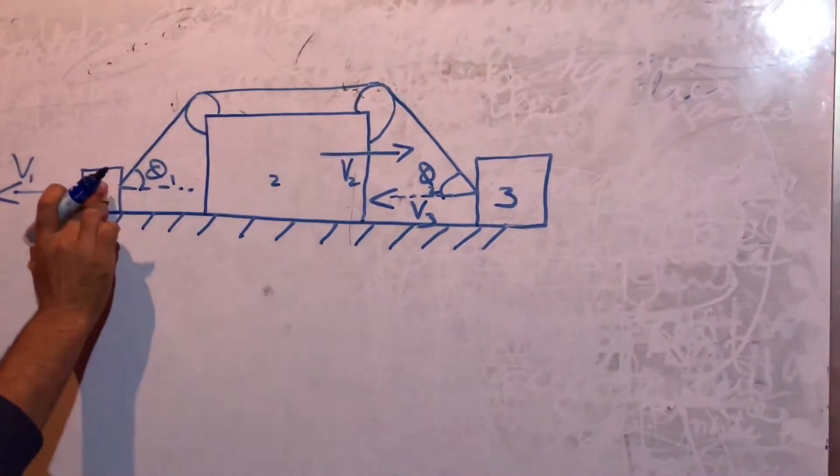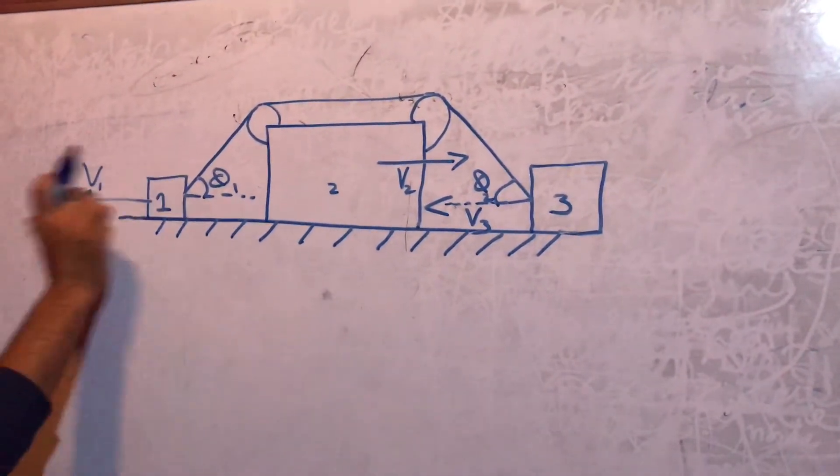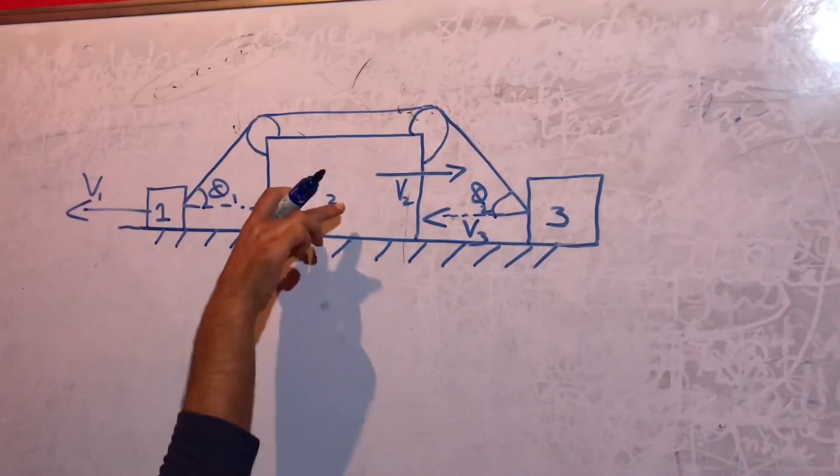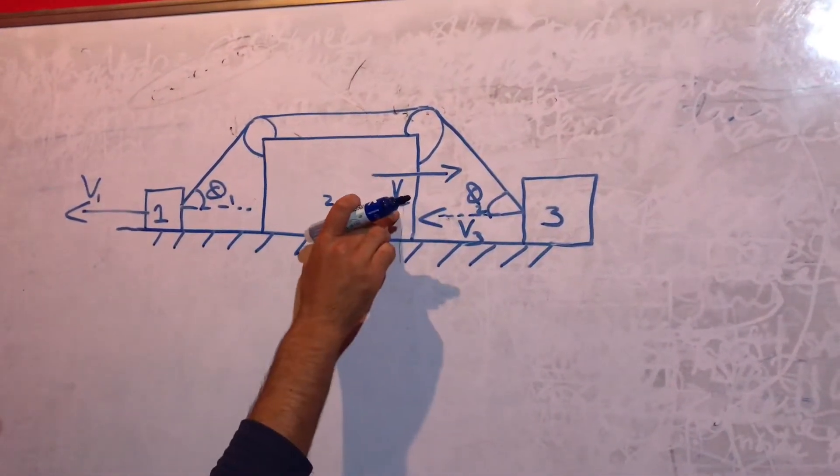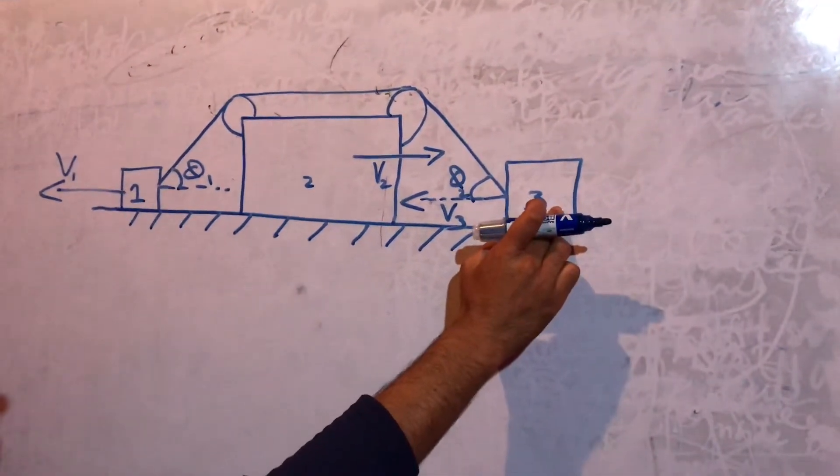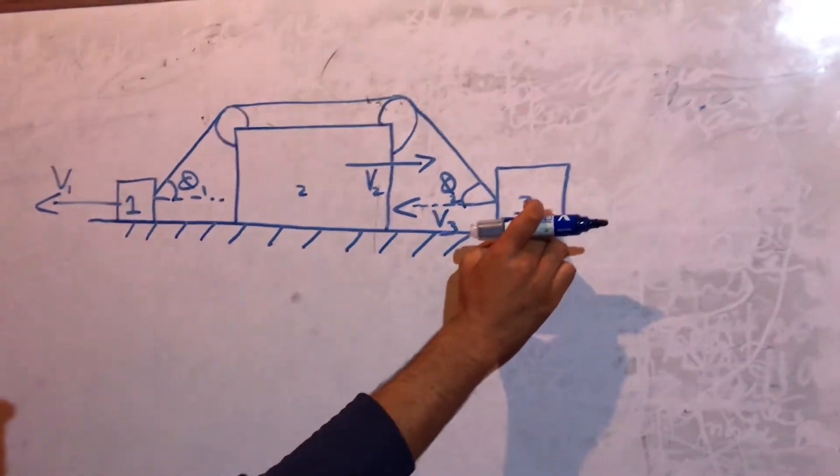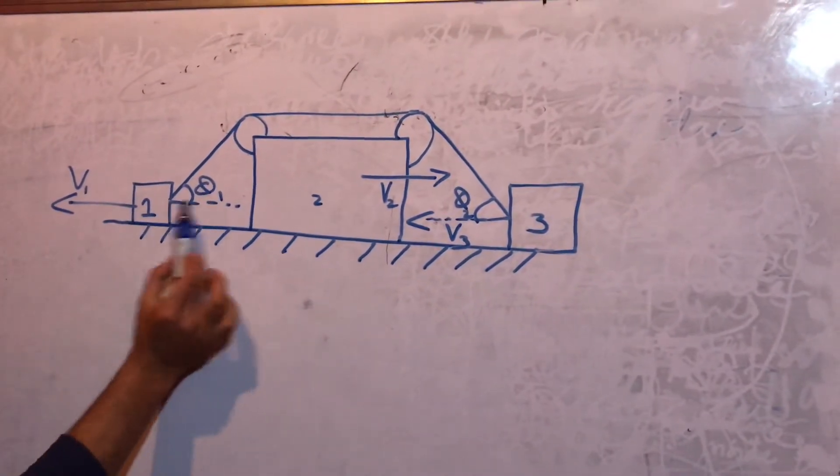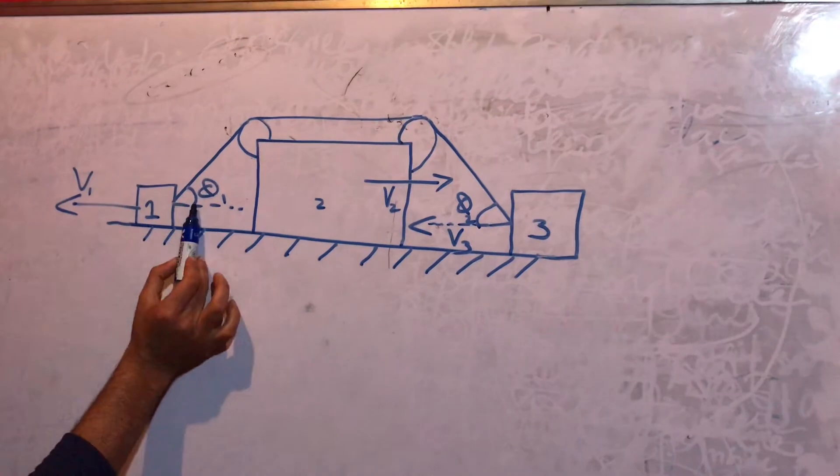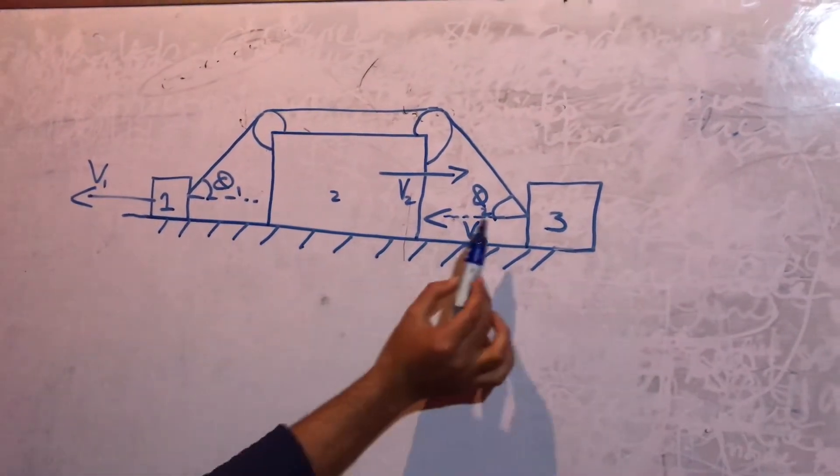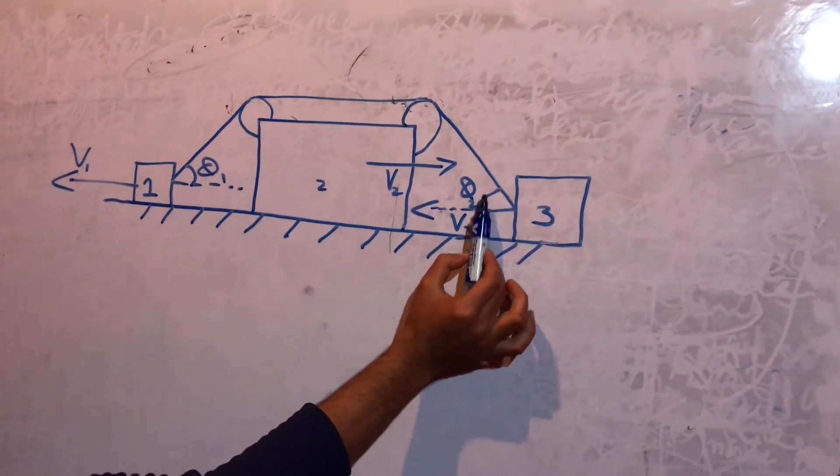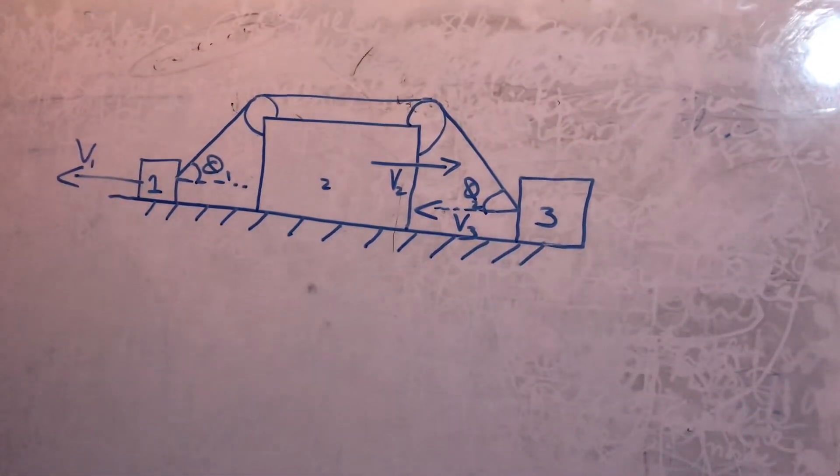What we have been given is that we have block 1, it is moving with a velocity v1 leftwards, and we have this block 2, it is moving in the backward direction with a velocity of v2, and here we have block 3, it is moving leftwards with a velocity v3. This angle the string is making with the horizontal is given, it is theta 1, and the velocity v3 is making an angle of theta 2 with this string.